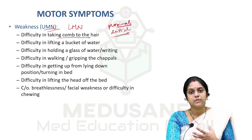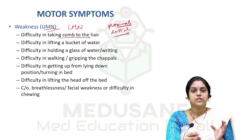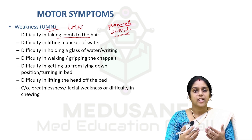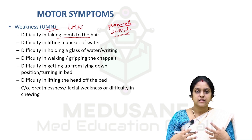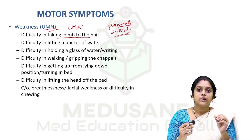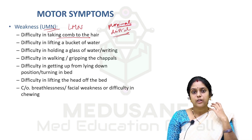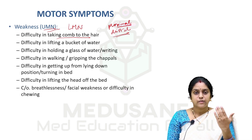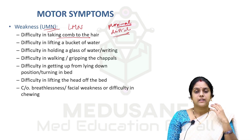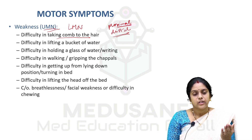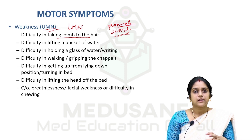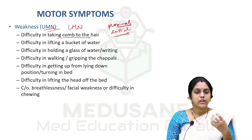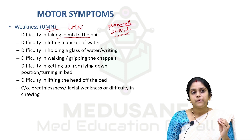Regarding the truncal muscles, the patient might say he is not able to change position in bed, not able to turn from side to side, or not able to get up from a lying down position and sit up in bed. If the cervical component is involved, the patient will say he has difficulty lifting his head from the bed. Along with all these things, the patient might also say he has difficulty in breathing, chewing, or talking, which can also be a component of the upper motor neuron lesion.